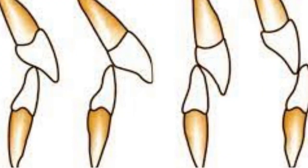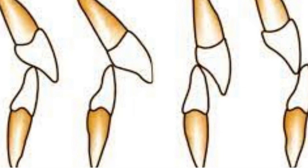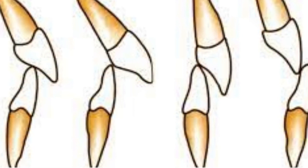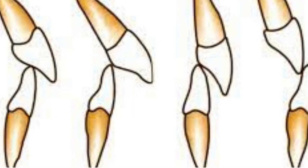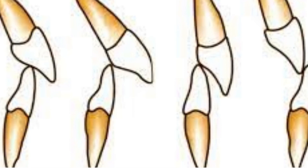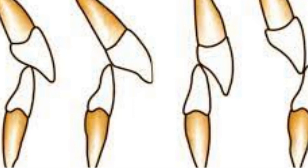Here is another picture. As you can see, in class 1, the lower incisor occludes on the cingulum of the upper incisor. In class 3, it is the opposite — the upper incisor occludes on the cingulum of the lower incisor. In class 2, we have division 1 and division 2. Division 1, the upper incisor is proclined very much, equal to increased overjet. In class 2, division 2, the upper incisor is retroclined, so there is a minimum or increased overjet.